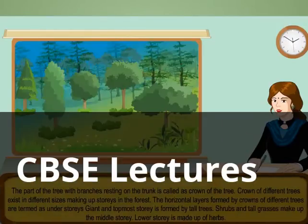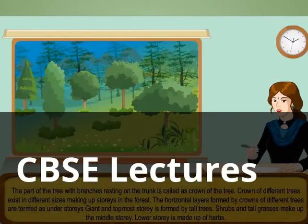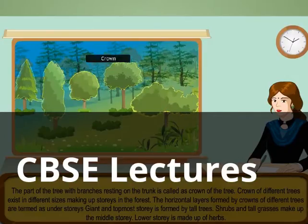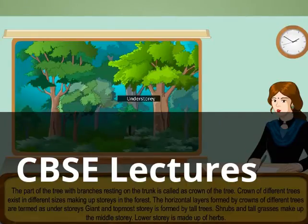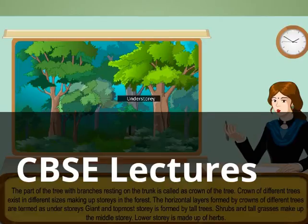Crown: The part of the tree with branches resting on the trunk is called the crown of a tree. Crowns of different trees exist in different sizes, making up stories in the forest. The horizontal layers formed by crowns of different trees are termed as understories.